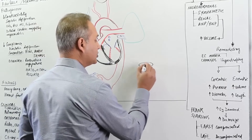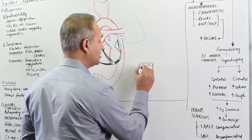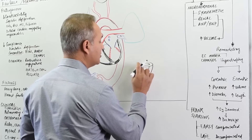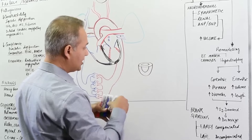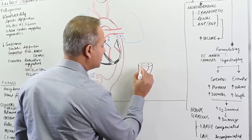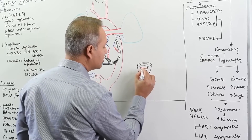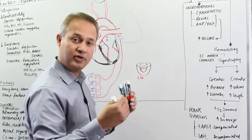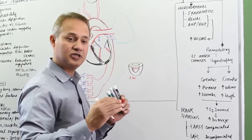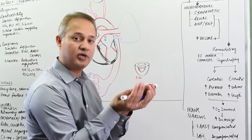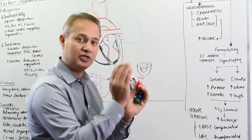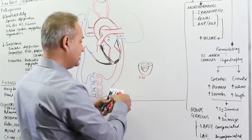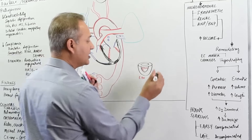Let's make a normal ventricle here. Blood comes into the ventricle and fills up to a particular amount — that is the end diastolic volume (EDV). That is the amount of blood present in the ventricle at the end of diastole, and this is the amount of blood on which the heart is going to work to eject it.